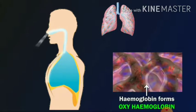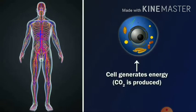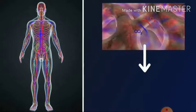Then hemoglobin forms oxyhemoglobin — the hemoglobin present in our RBCs combines with oxygen to form oxyhemoglobin. And our heart pumps all this blood throughout the entire body. Then cells generate energy, and then CO2 is produced as a waste product during the respiration process.